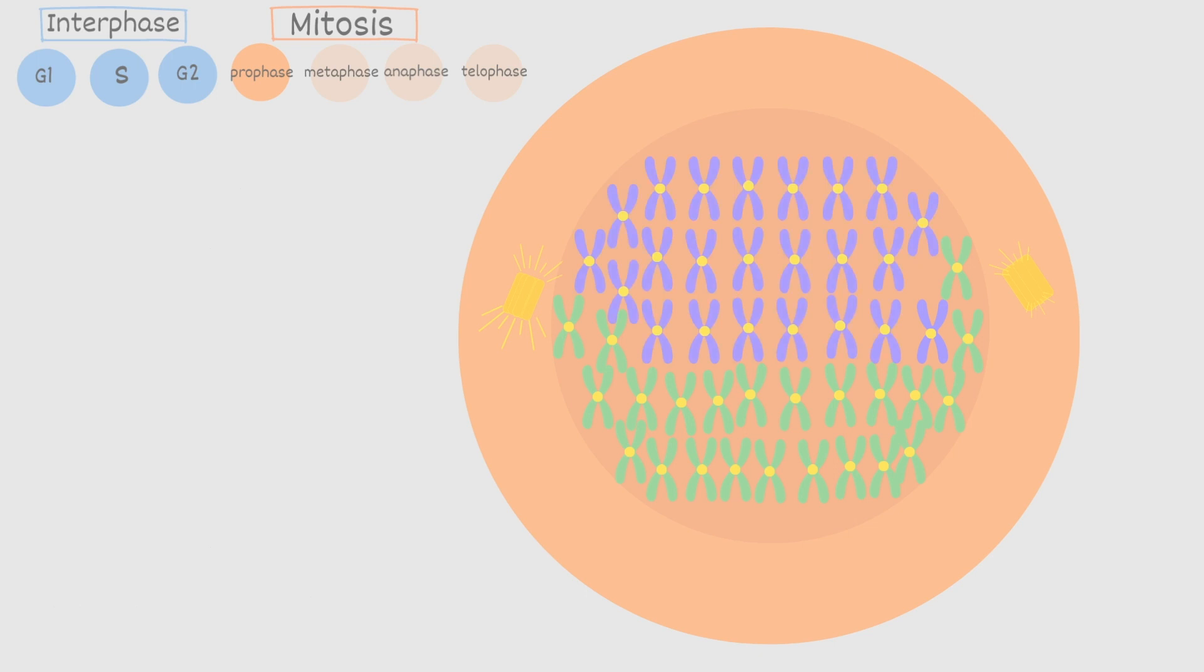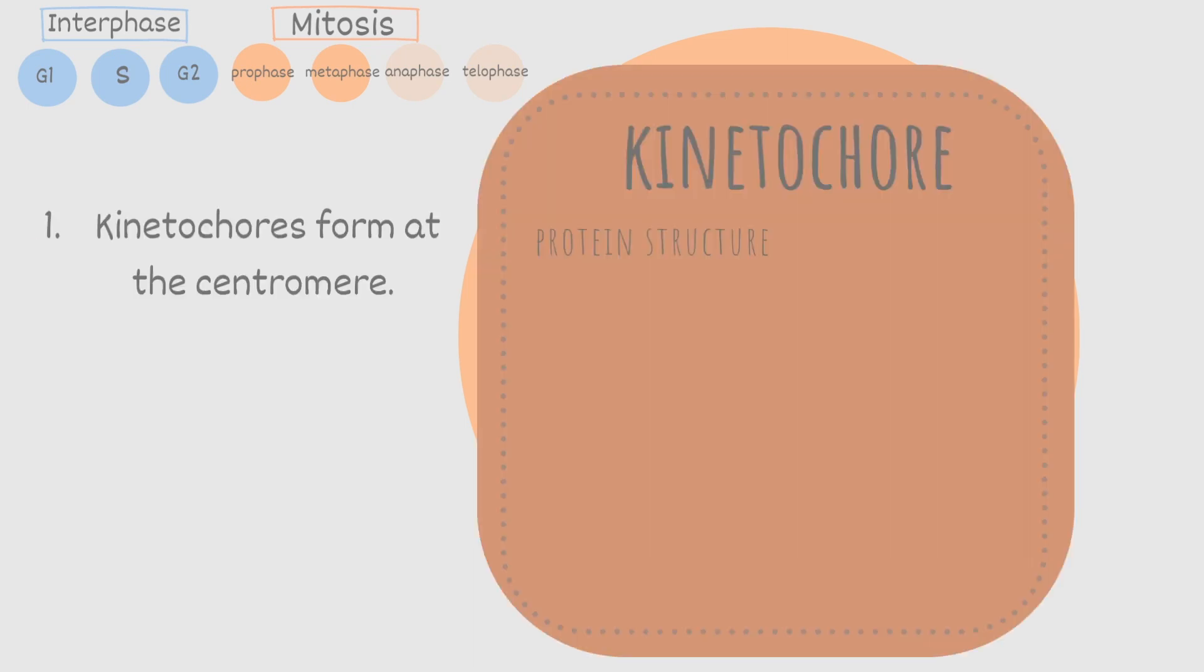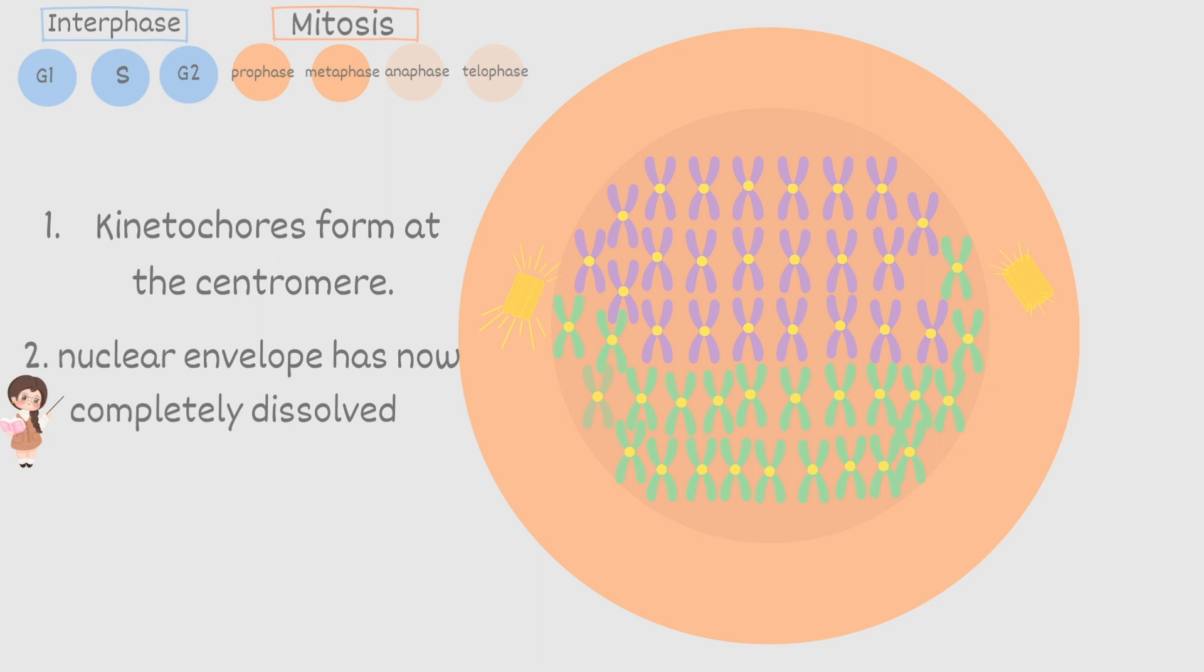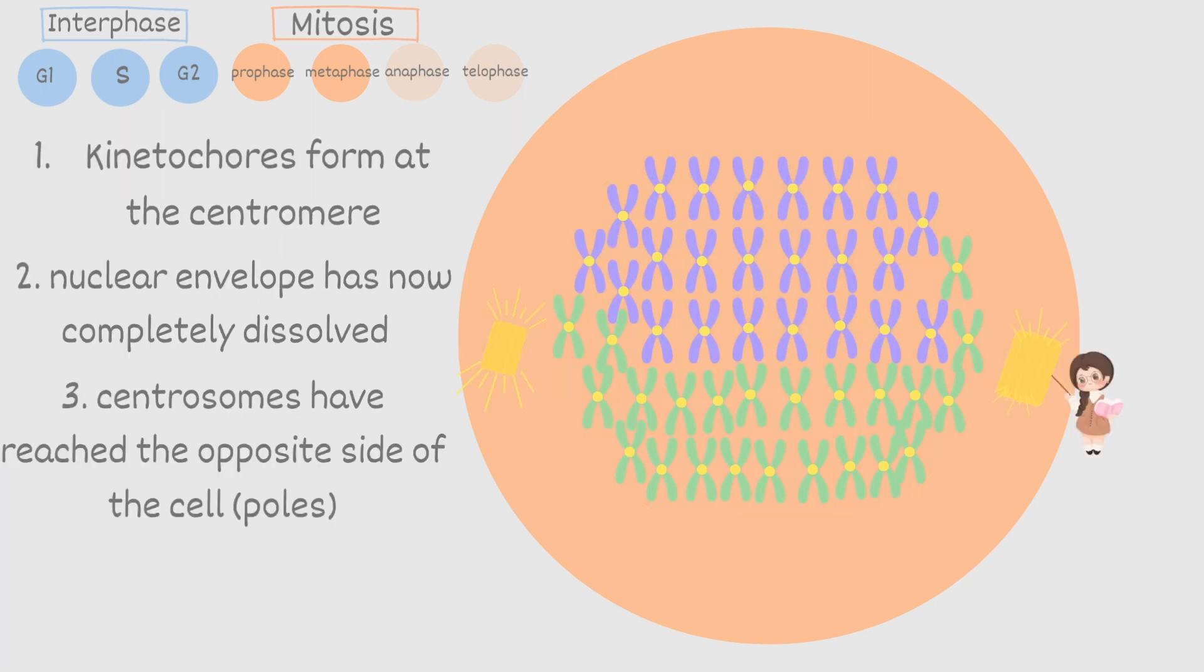After prophase the cell moves into metaphase. Here the kinetochores form at the centromere. Kinetochores are a protein structure and they are found on the centromere but also on the microtubule spindle. Here's an illustration I found online that shows a bit how the kinetochore works. It holds on to the microtubule and locks it in place. So next the nuclear envelope in metaphase has completely dissolved and the centrosomes have now reached the opposite sides of the cell or pole.